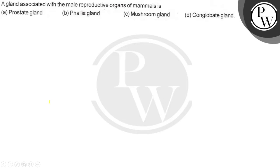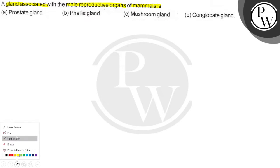Hello guys, let's see the question. The question is: a gland associated with the male reproductive organs of the mammals is? Option A is prostate gland, option B is pellic gland, option C is mushroom gland, and option D is conglomerate glands.